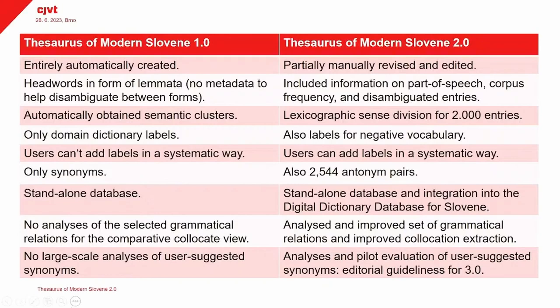Last but not least, we have two topics that were covered yesterday. The first one by Iztok Kosem, who talked about how we improved collocation extraction also for the collocation dictionary of modern Slovene. We also improved the set of grammatical relations we're using in the comparative collocate view. And the last one was presented by Magdalena Gaps, explaining how we evaluated a large number of user-suggested synonyms — and we will use these results for thesaurus 3.0.